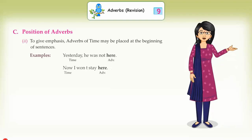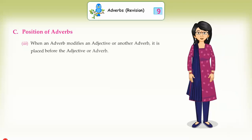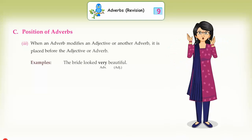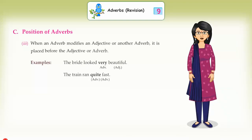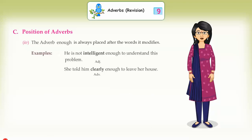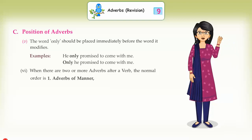(3) When an adverb modifies an adjective or another adverb, it is placed before the adjective or adverb. Examples: The bride looked very beautiful. The train ran quite fast. (4) The adverb 'enough' is always placed after the word it modifies. Examples: He is not intelligent enough to understand this problem. She told him clearly enough to leave her house. (5) The word 'only' should be placed immediately before the word it modifies. Examples: He only promised to come with me. Only he promised to come with me.